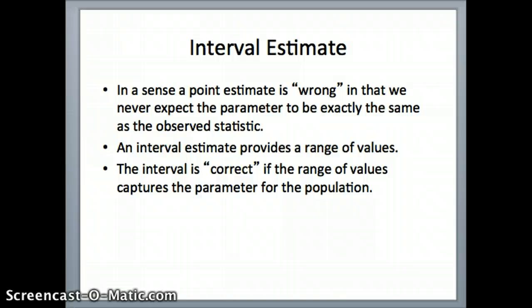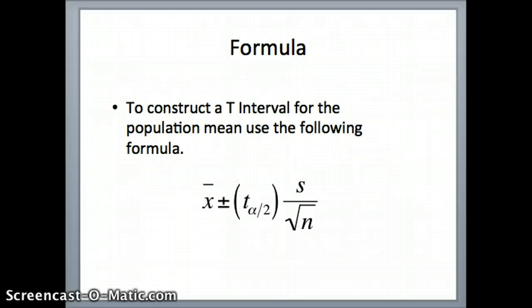So we need a formula to do this. And to do the t-interval for the population mean, we use the following formula: x-bar, the average, plus or minus t alpha by 2, we'll talk about what that means, times s, that is the sample standard deviation, divided by the square root of n, and n is the number of items in our sample. So we get x-bar, s, and n either from the data or from the statistics given. The one thing we have to determine is t alpha by 2. So we'll talk about how to find that.